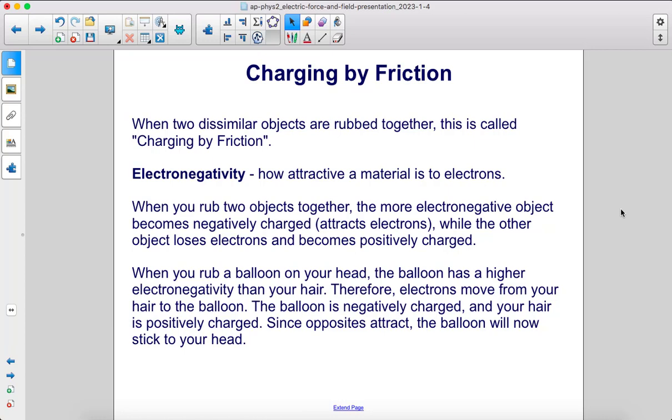Electronegativity is how attractive a material is to electrons. When you rub two objects together, the more electronegative object becomes negatively charged. It attracts electrons, while the other object loses electrons and becomes positively charged.